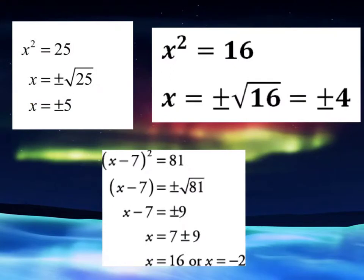And now here are some examples of using the square root property. Let's look at the first one in the upper left-hand corner. If you had x squared equals 25, if I said solve for x, that means you want to solve for one single x, which means you want to get rid of the square. To do that, you need to use the square root property.